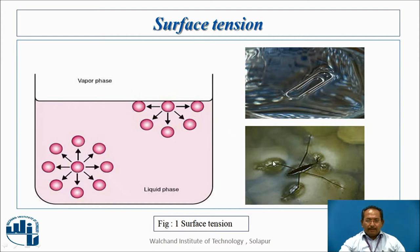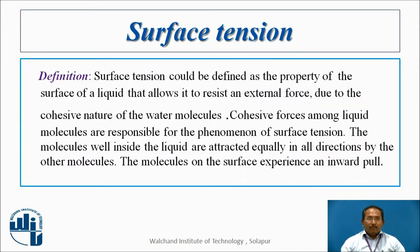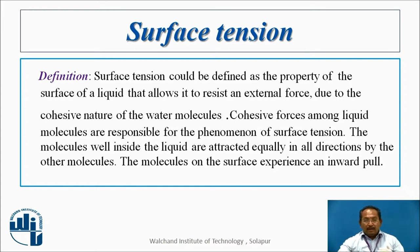So these are the best examples. Now, what is the definition? Surface tension is defined as the property of the surface of the liquid that allows it to resist an external force, due to the cohesive nature of the water molecules. Cohesive forces among the liquid molecules are responsible for the phenomenon of surface tension. The molecules well inside the liquid are attracted equally in all directions by the other molecules, and they balance each other. The molecules on the surface experience an inward pull.